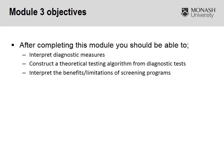Here are the objectives for Module 3 EBCP, where we're going to focus on the second and third learning outcomes that relate to likelihood ratios and how they fit into the whole testing algorithm.